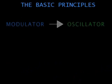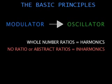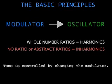FM involves modulating the frequency of one oscillator against another oscillator. Even ratios add frequencies in the harmonic series. Non-ratios add frequencies outside of the harmonic series. Controlling the volume of the modulator will affect how loud those added frequencies are. Envelopes allow those changes to happen over time.